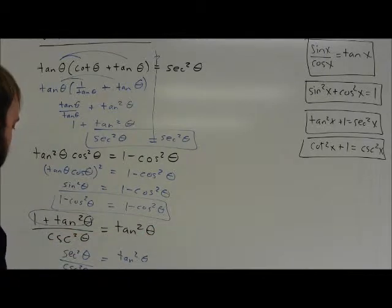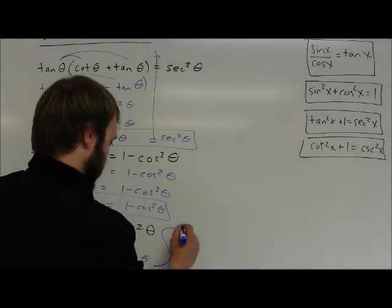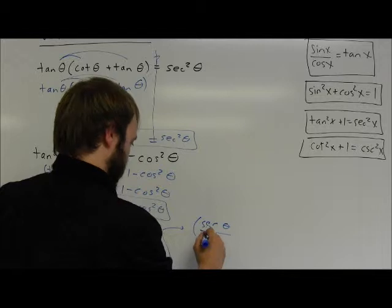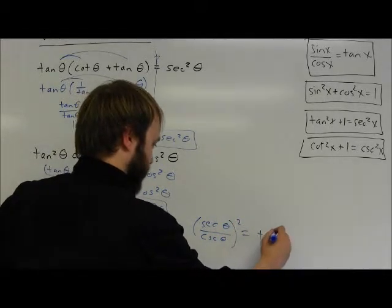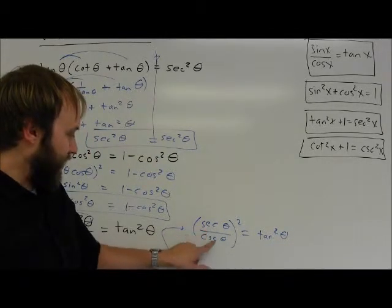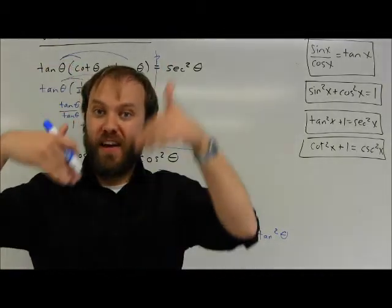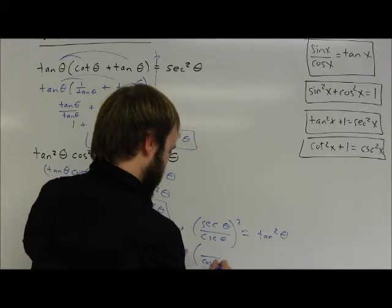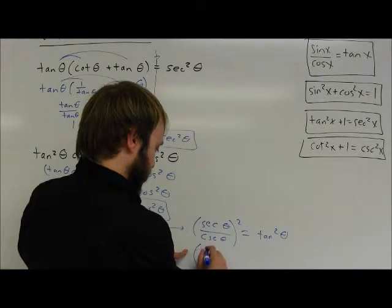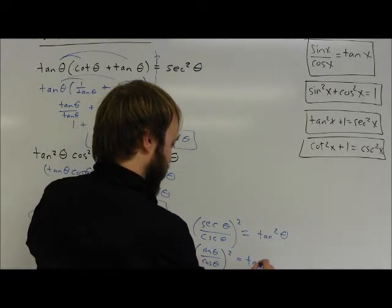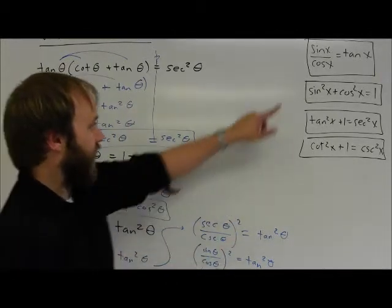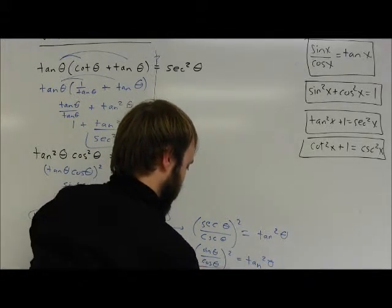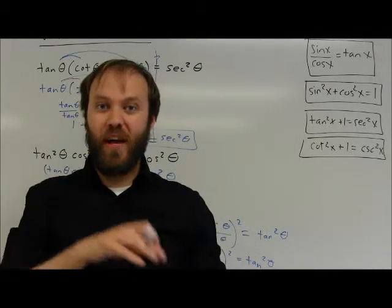Moving to a new space on the board: this is the same thing as (secant theta over cosecant theta) being squared. Notice that secant and cosecant can both be moved to opposite parts of the fraction since there's no addition. Secant is the reciprocal of cosine, so it goes to the denominator as cosine. Cosecant is the reciprocal of sine, so it moves to the numerator as sine. Sine over cosine is tangent, giving me tangent squared of theta equals tangent squared of theta. The identity is verified.